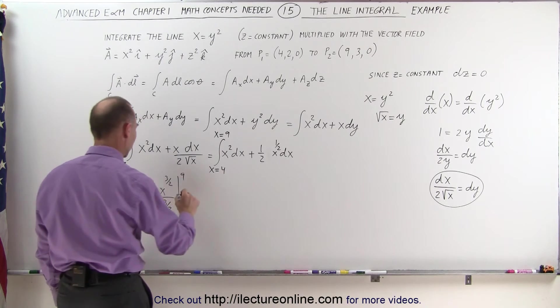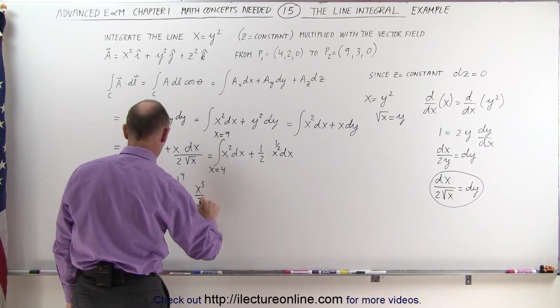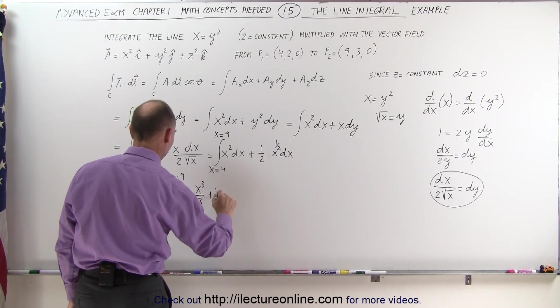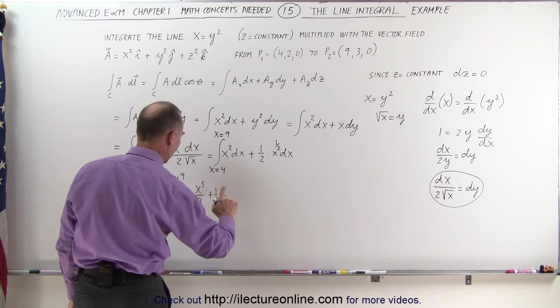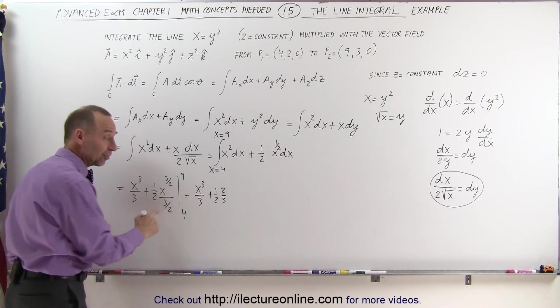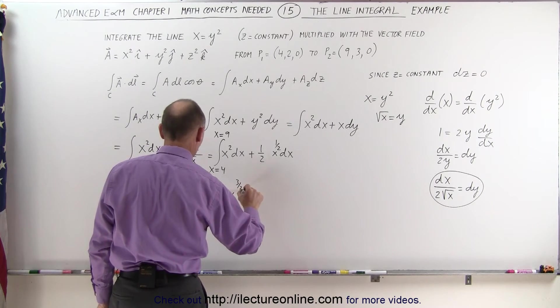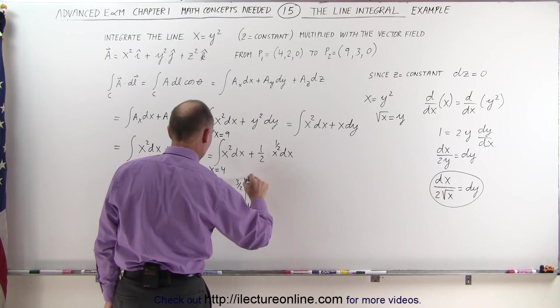Simplifying this a little bit, I can then write this as x cubed over 3 plus one-half times, not 3 over 2, but 2 over 3, because when you divide by a fraction, the same as multiplying by the inverse, and I'll write this as x to the three-halves, evaluated from 4 to 9.